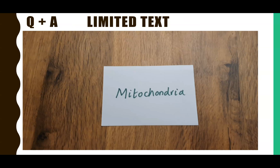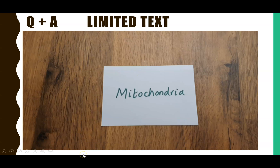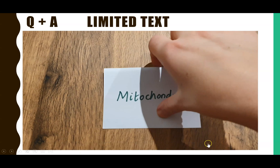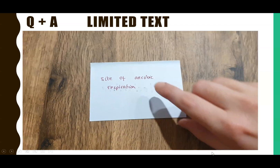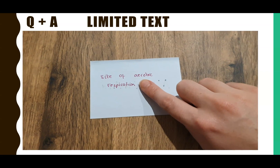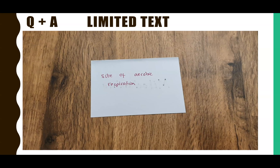With flashcards you should have a question and an answer, or a definition, but with very limited text on the other side. For example: 'mitochondria' — just one sentence: 'site of aerobic respiration.' That way you can clearly know whether you remembered that one small piece of information rather than overwhelming the card with so many facts.